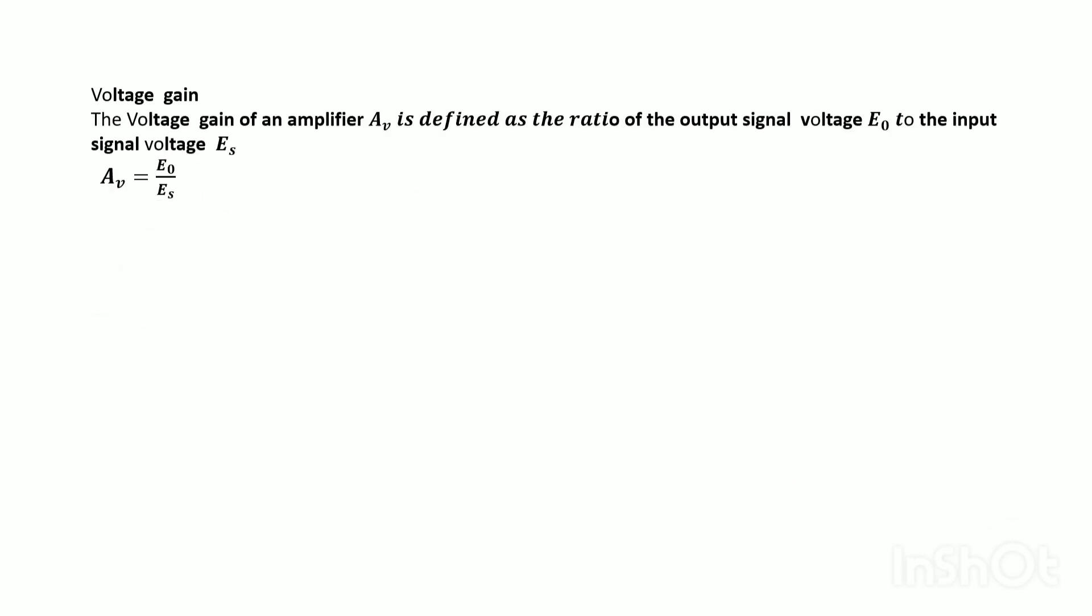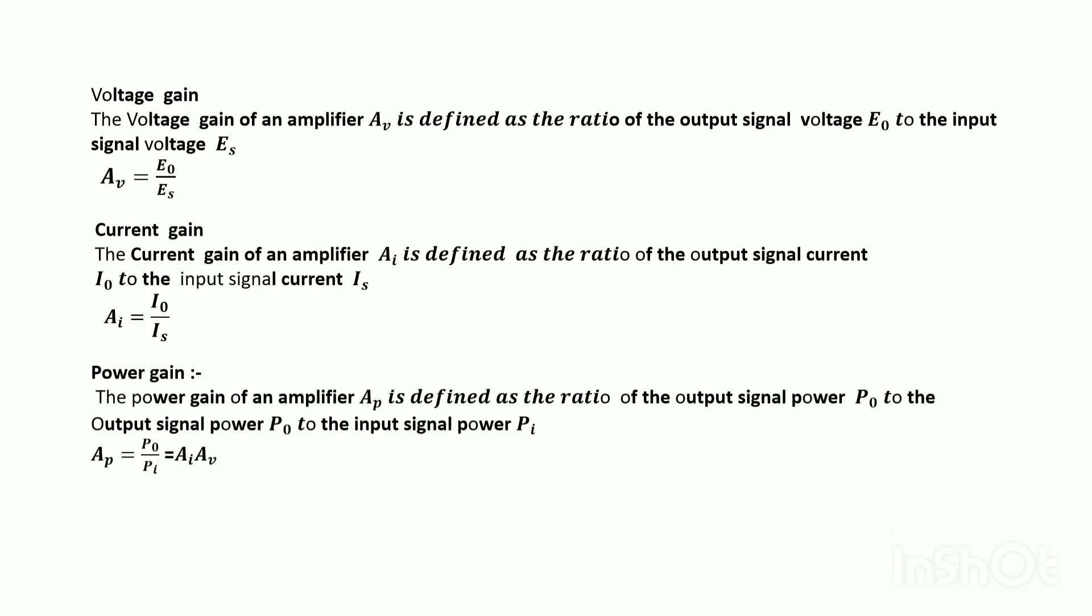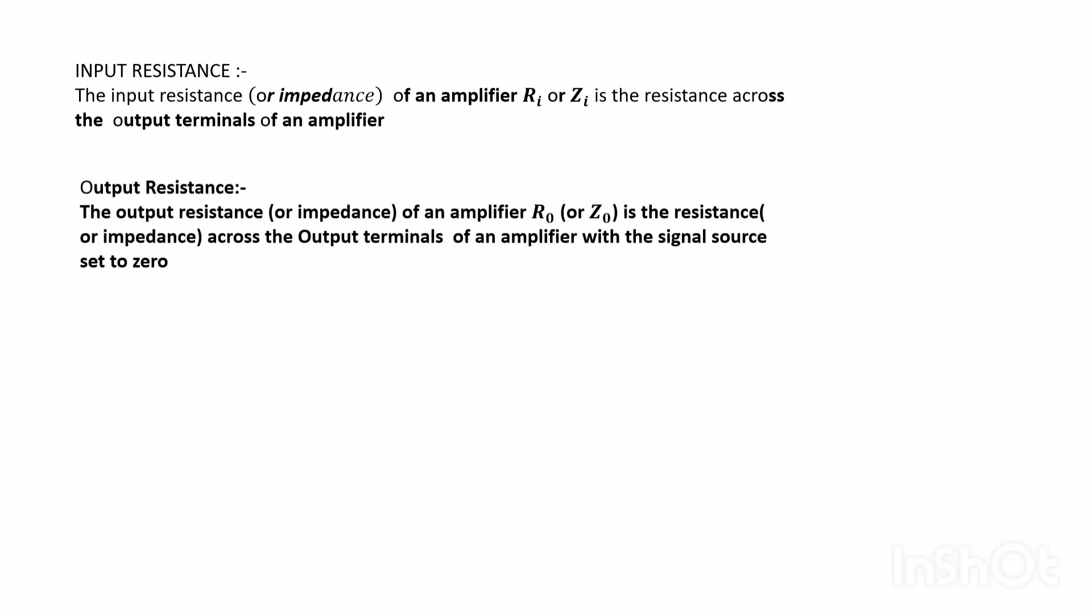Voltage gain Av is E0 divided by Es. Current gain Ai is I0 divided by Is. Power gain Ap is P0 divided by Pi, and Ap equals Av times Ai. The product of voltage gain and current gain equals power gain.